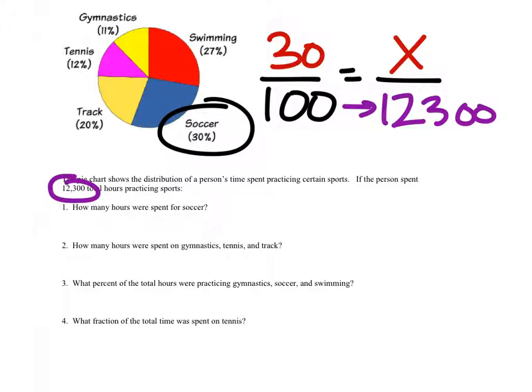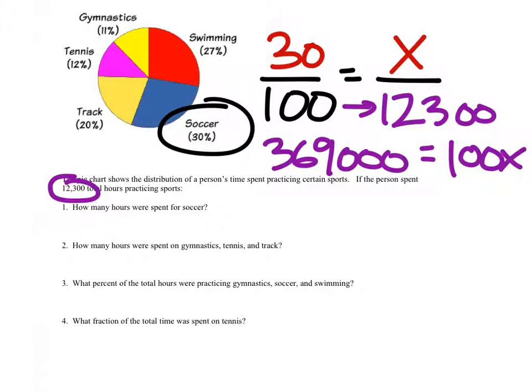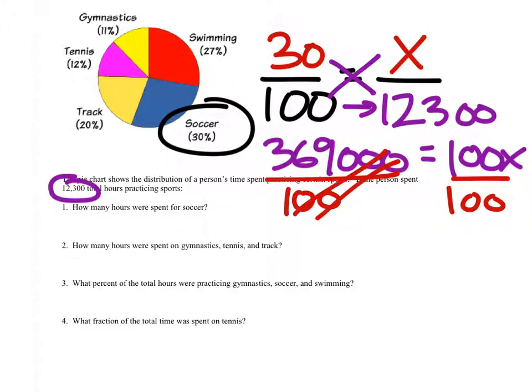All right. I would use cross multiplication for this, which would give me 369 and some zeros. And that would equal 100x. Is that okay? I'll show that in here. So there's our cross for the multiplication. And now we would divide both sides by 100. And it gives us a pretty good number because we're just going to cross out some zeros. These cancel out, and we have x equals 3,690 hours for this question, specifically, that was spent playing soccer.